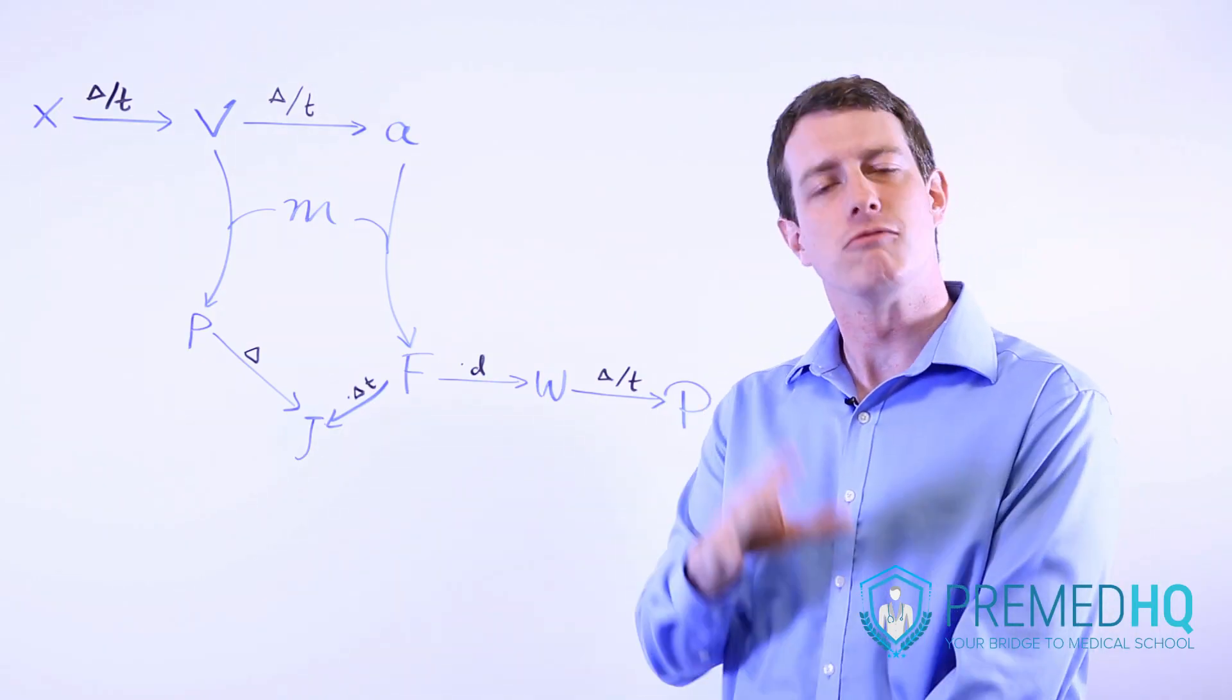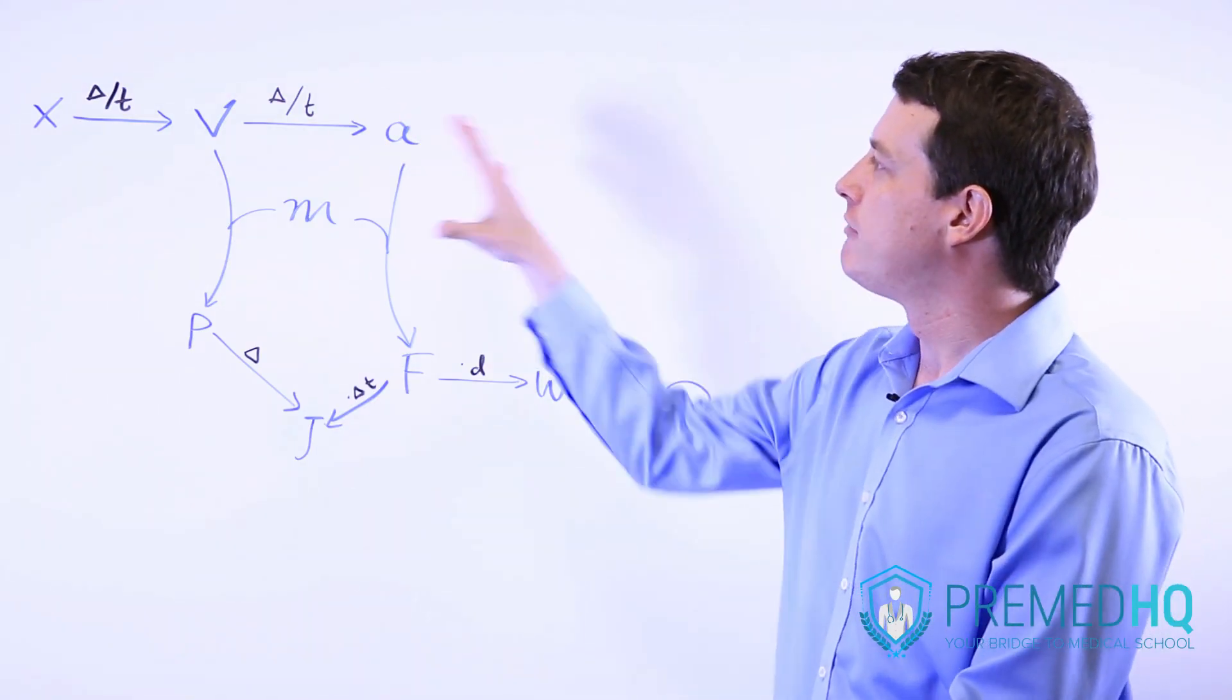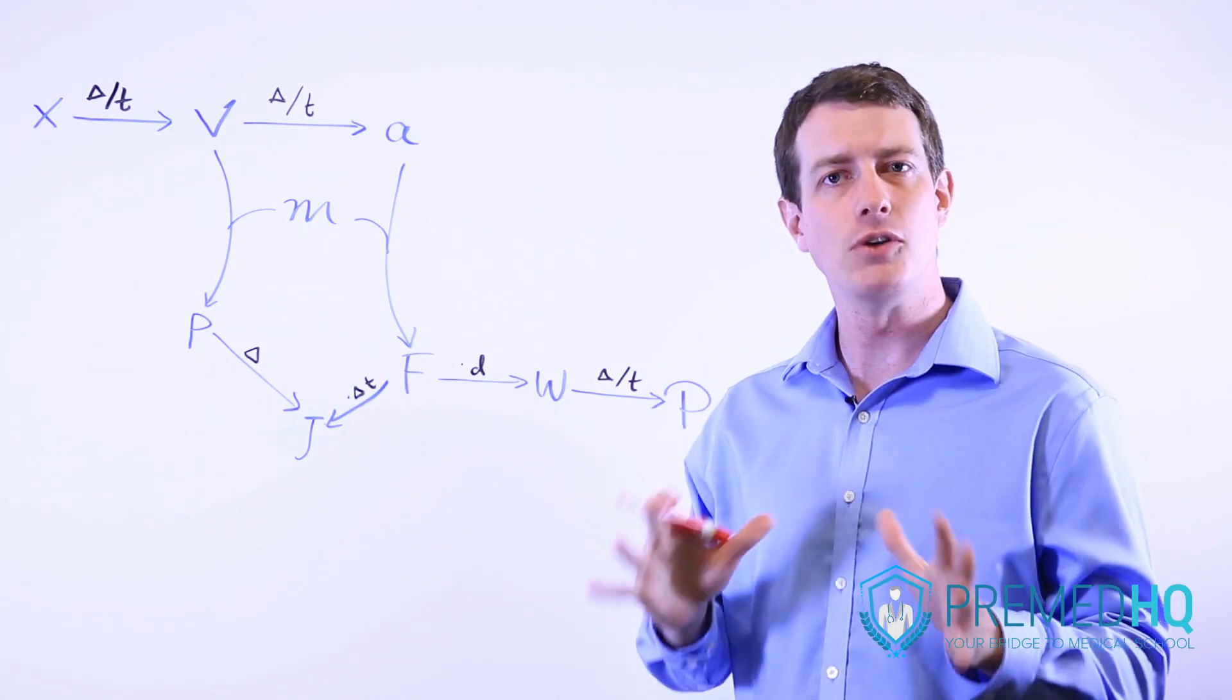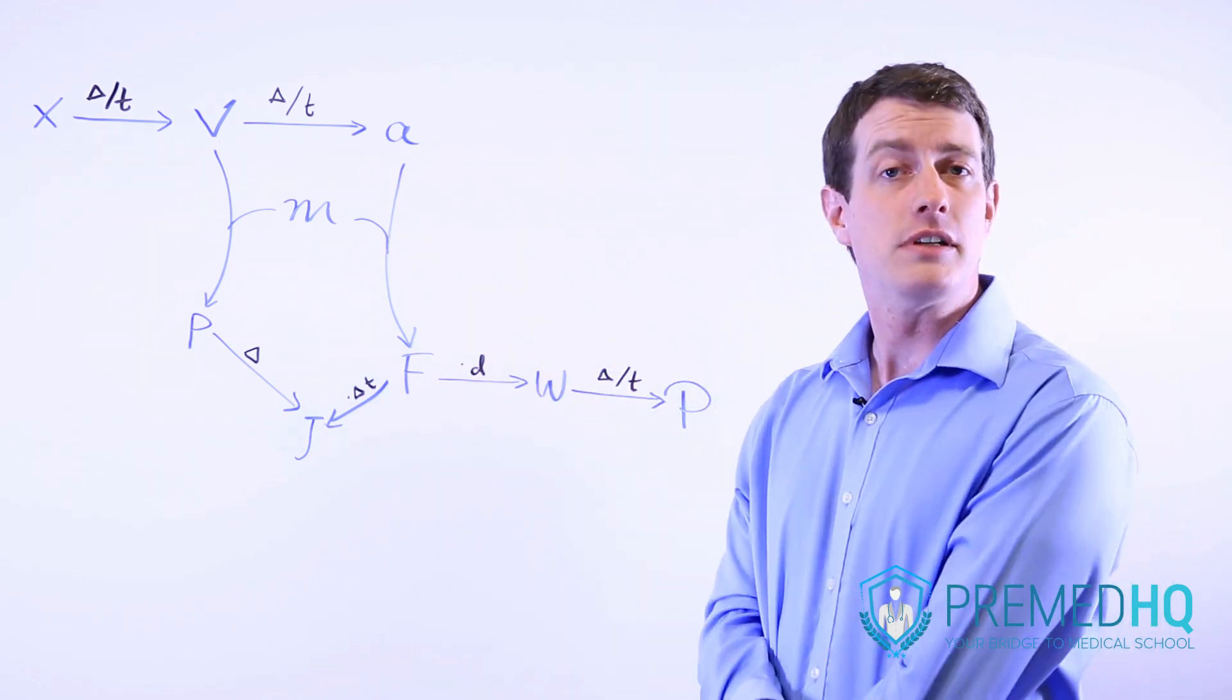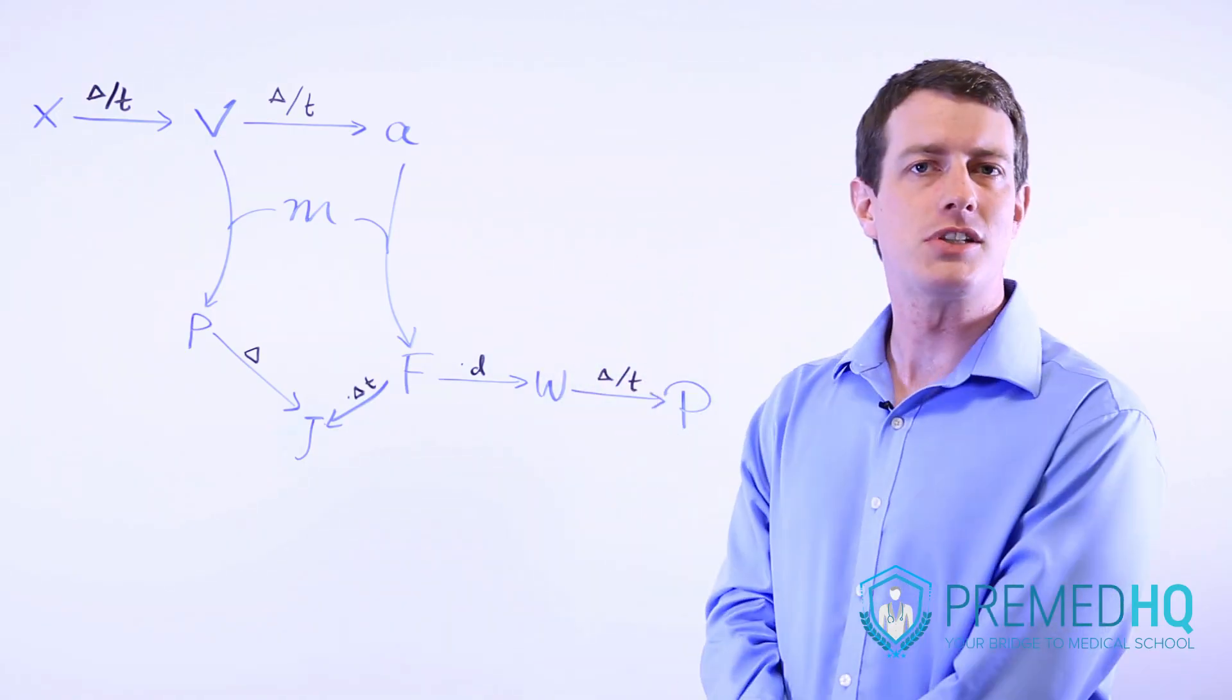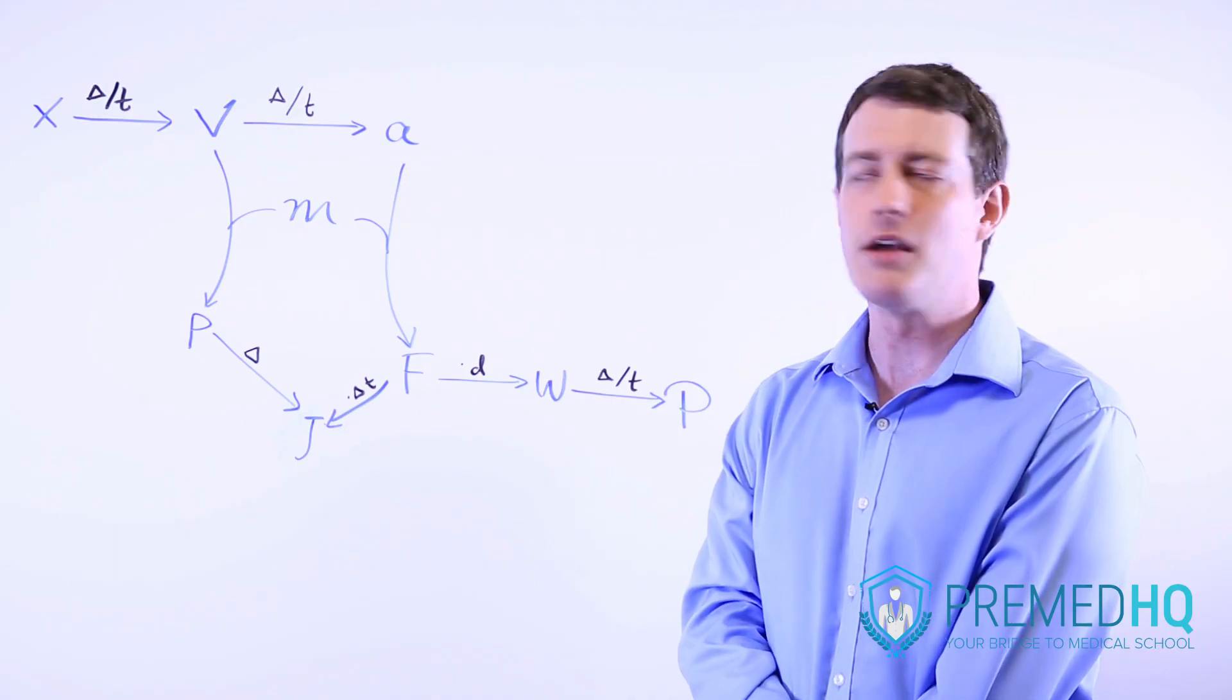But rather than just requiring rote memorization for all of these, what I've done here is I've laid out a flow chart that can help you relate these formulas to each other to help give you a better sense of context. And later on we'll be relating this to all of the major core SI units that we'll be using and also using this flow chart to help us understand some of the most common graphs that you'll encounter in the physics section of the MCAT.